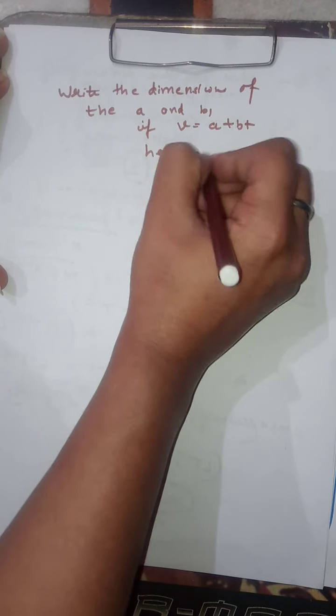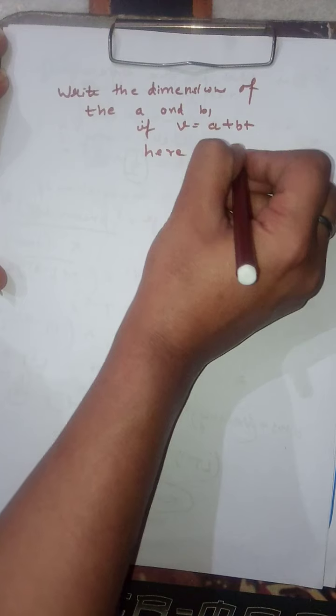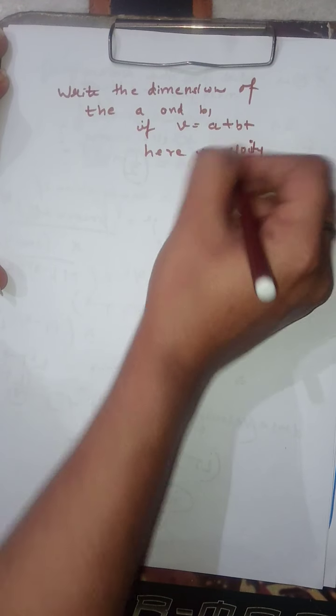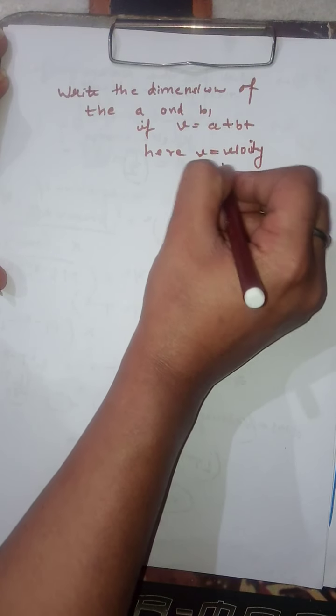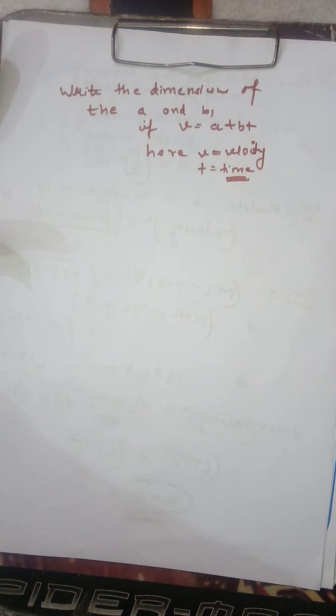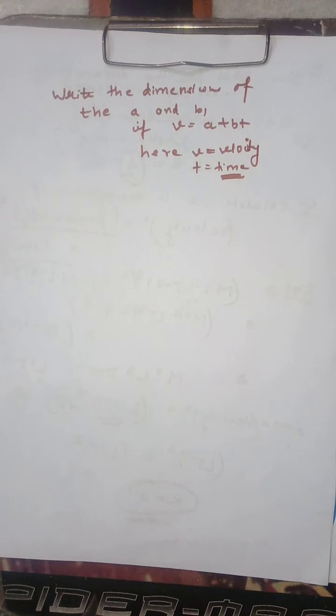Here v is the velocity and t is the time. Find the dimensions of a and b in the equation v equals a plus b t, where v is velocity and t is time.